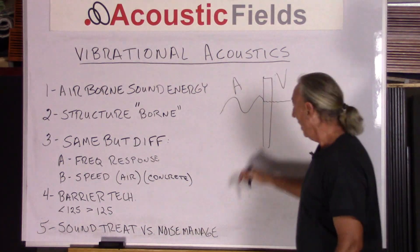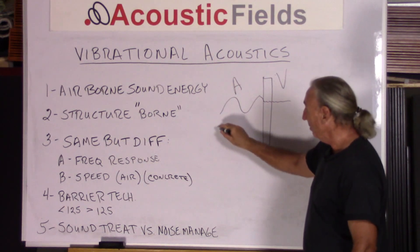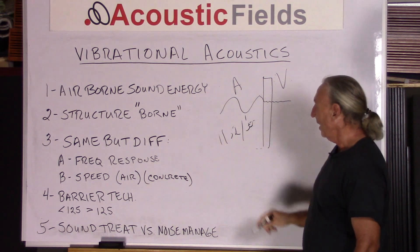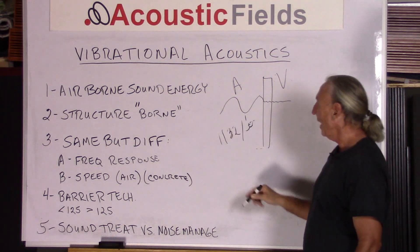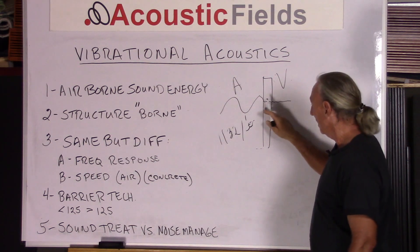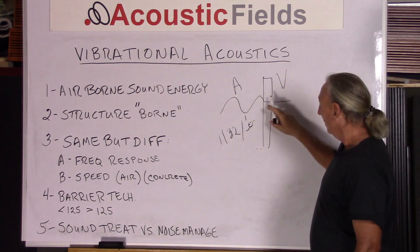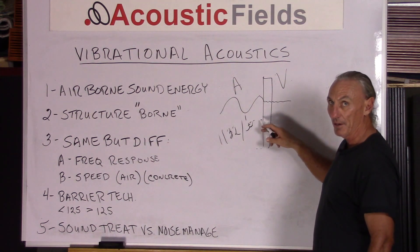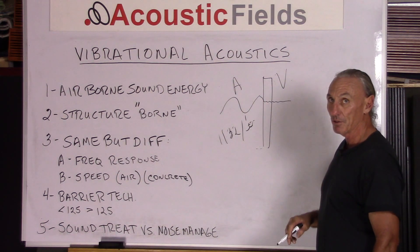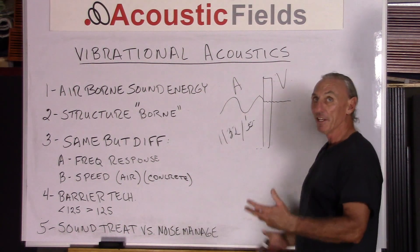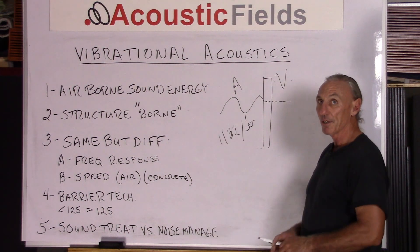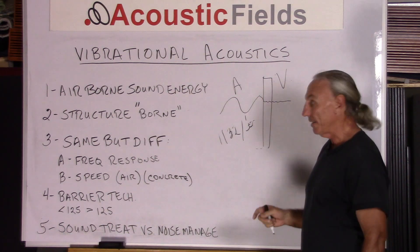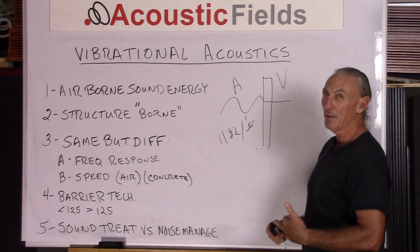The speed of airborne energy is 1,132 feet per second. When the energy strikes a surface and hits a solid, we have to add in the density of that solid to the speed calculation — and it's going to be slower, since air is much less dense than concrete, wood, or almost any other substance. So we get both a speed variance and a frequency response difference.